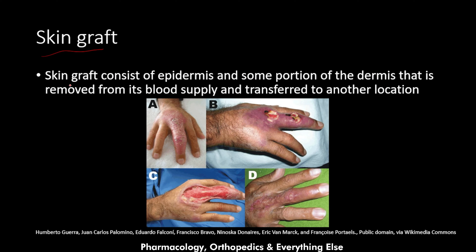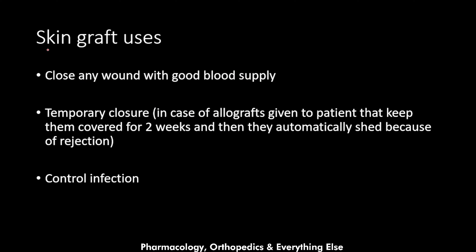The skin graft consists of epidermis and some portion of the dermis that is removed from its blood supply and transferred to another location — so it is epidermis plus some portion of the dermis, with no blood supply to the graft. As an example, this patient had an ulceration over their middle finger, treated by excising the ulcer and grafting.